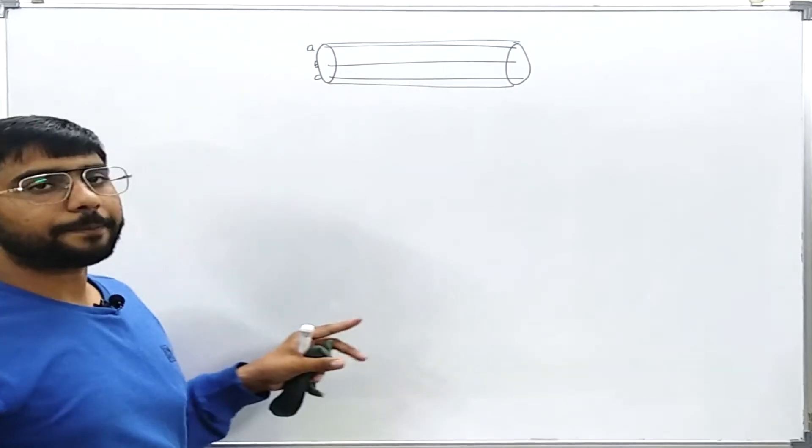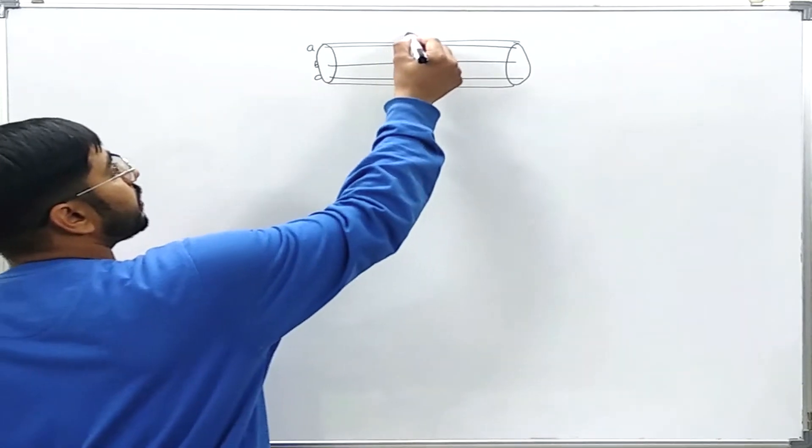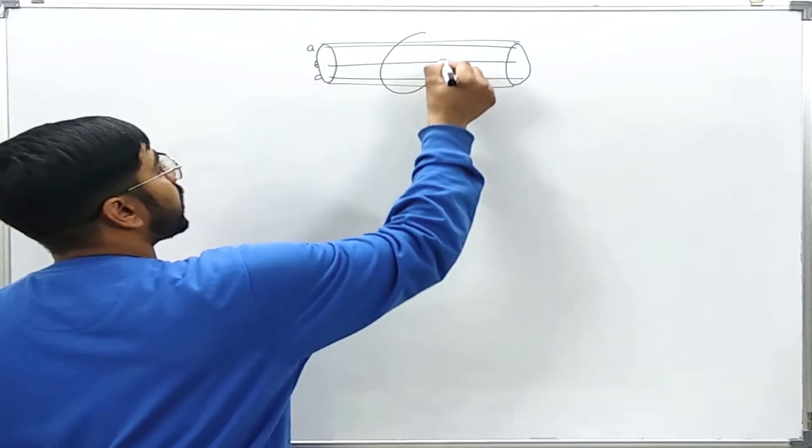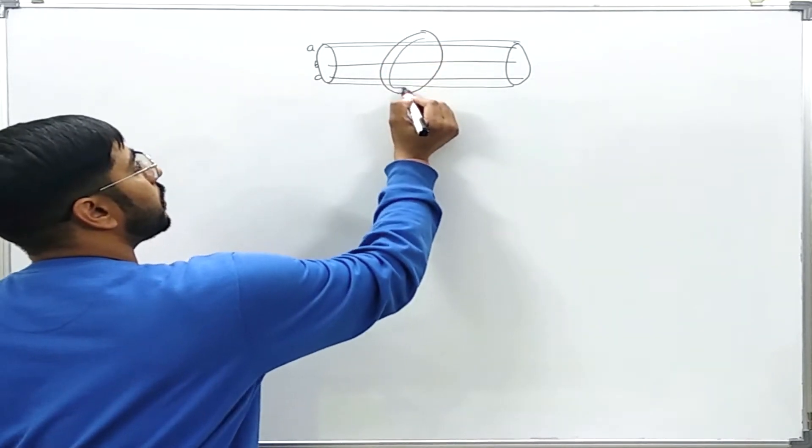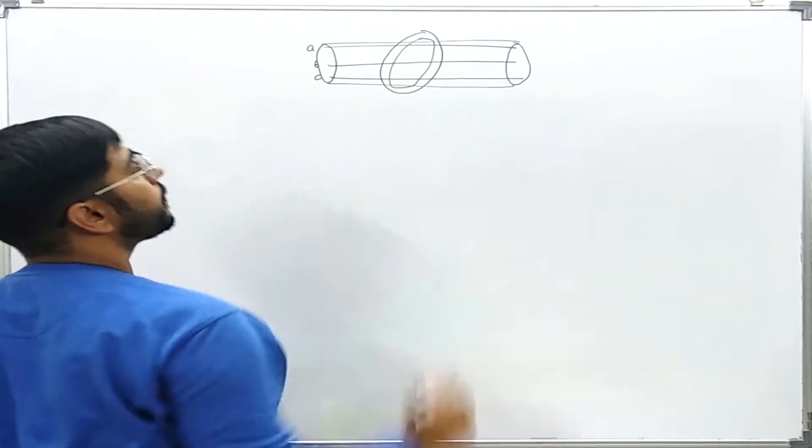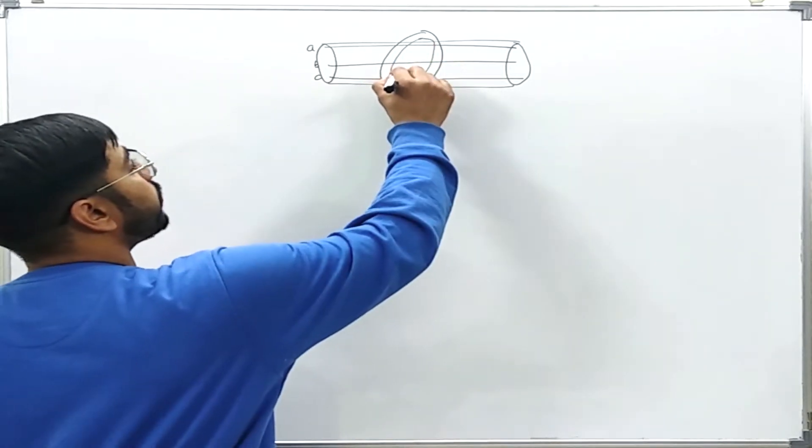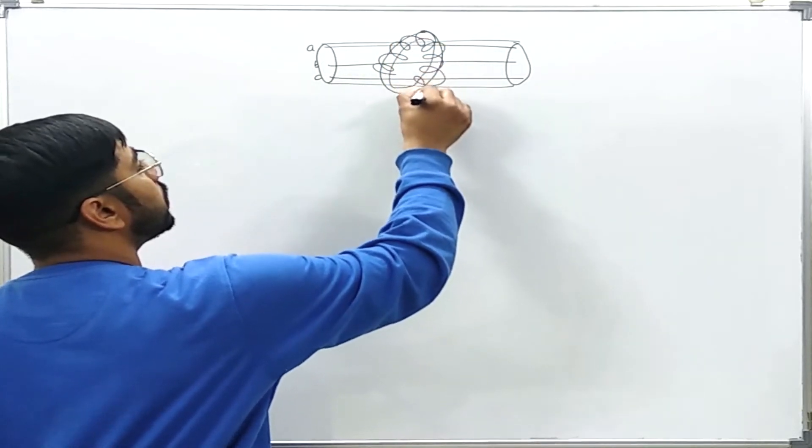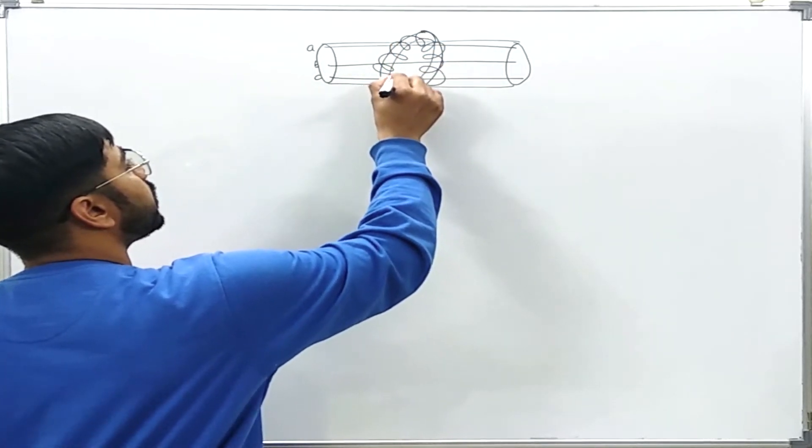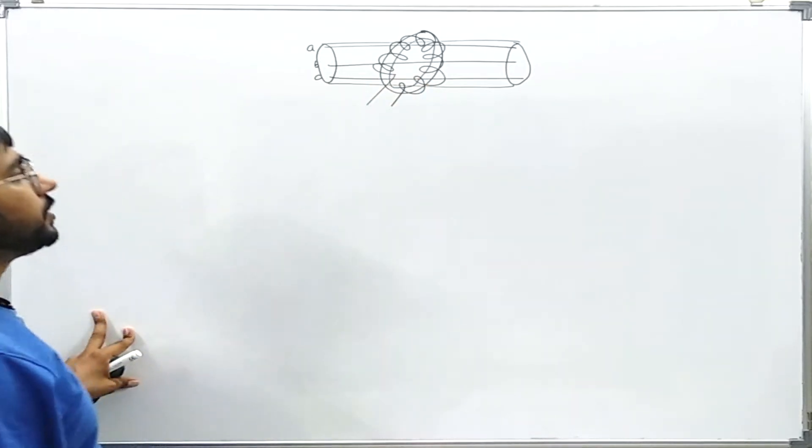What will happen if I take a CT core around this cable? This is the CT core and now I wound the secondary of the CT on this core and take output terminals.